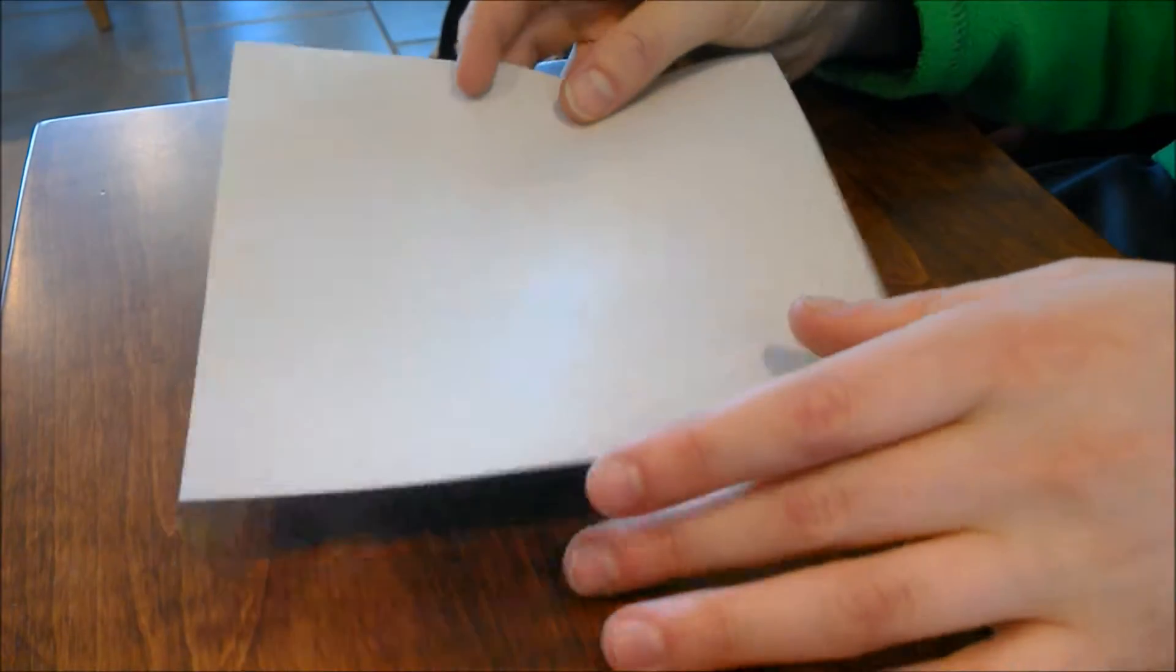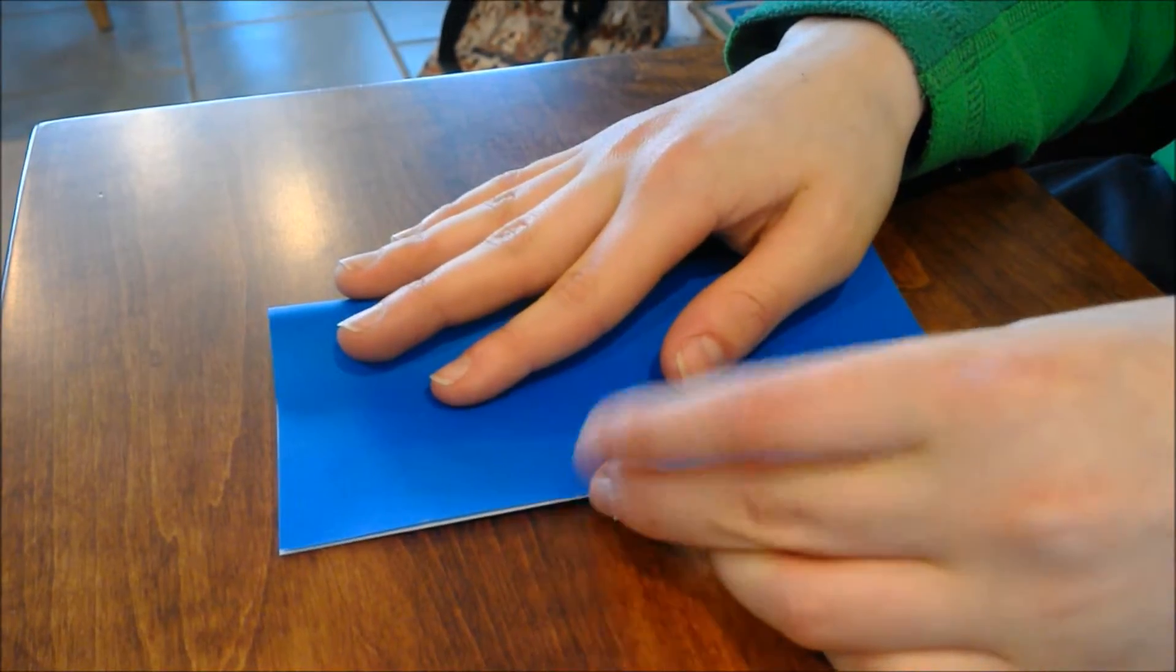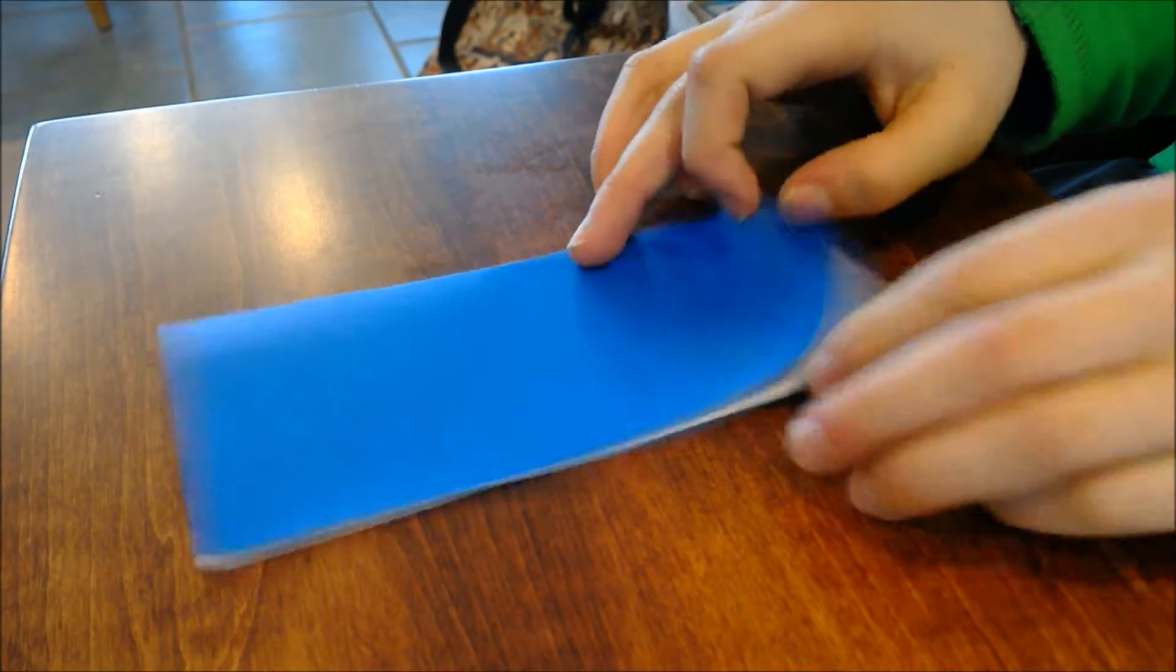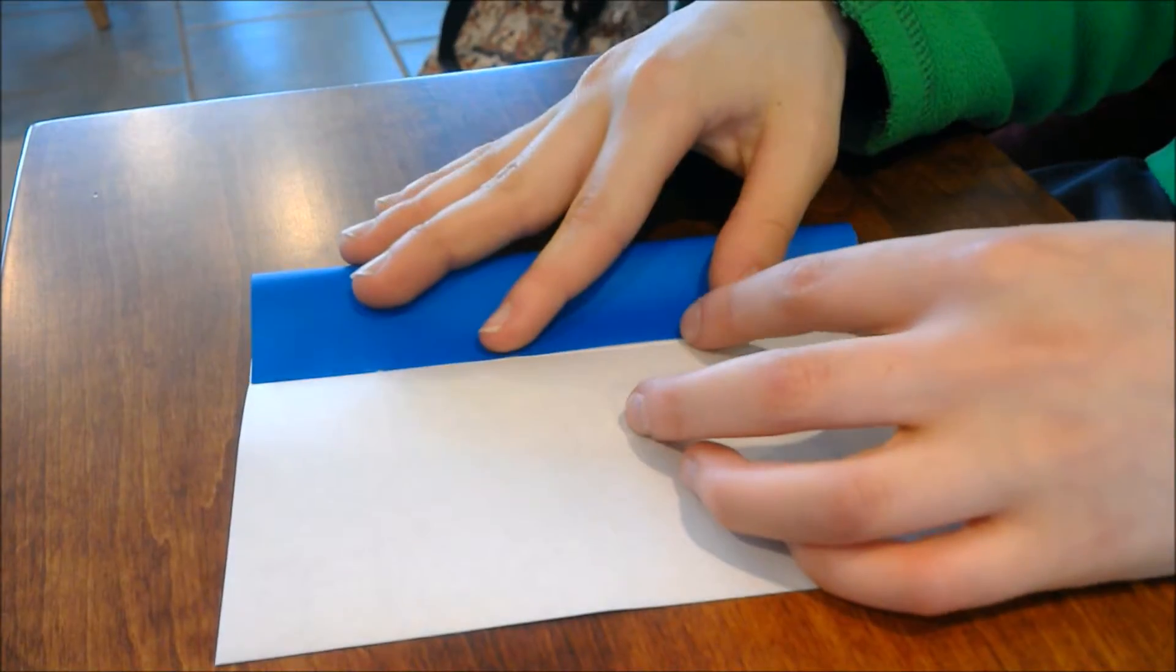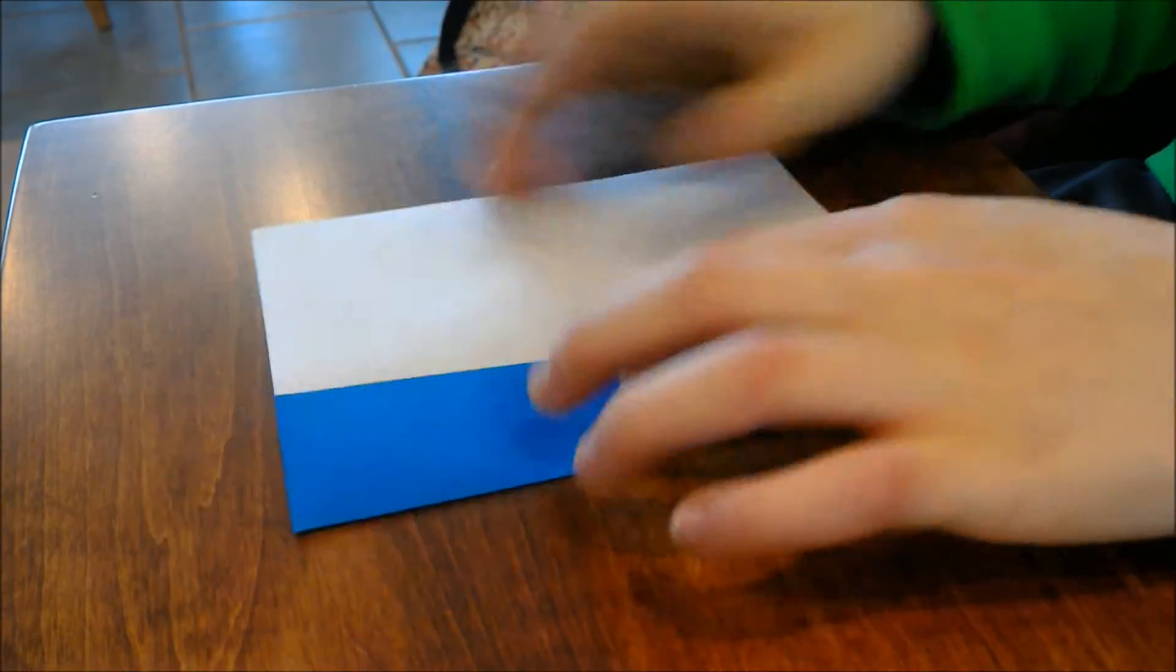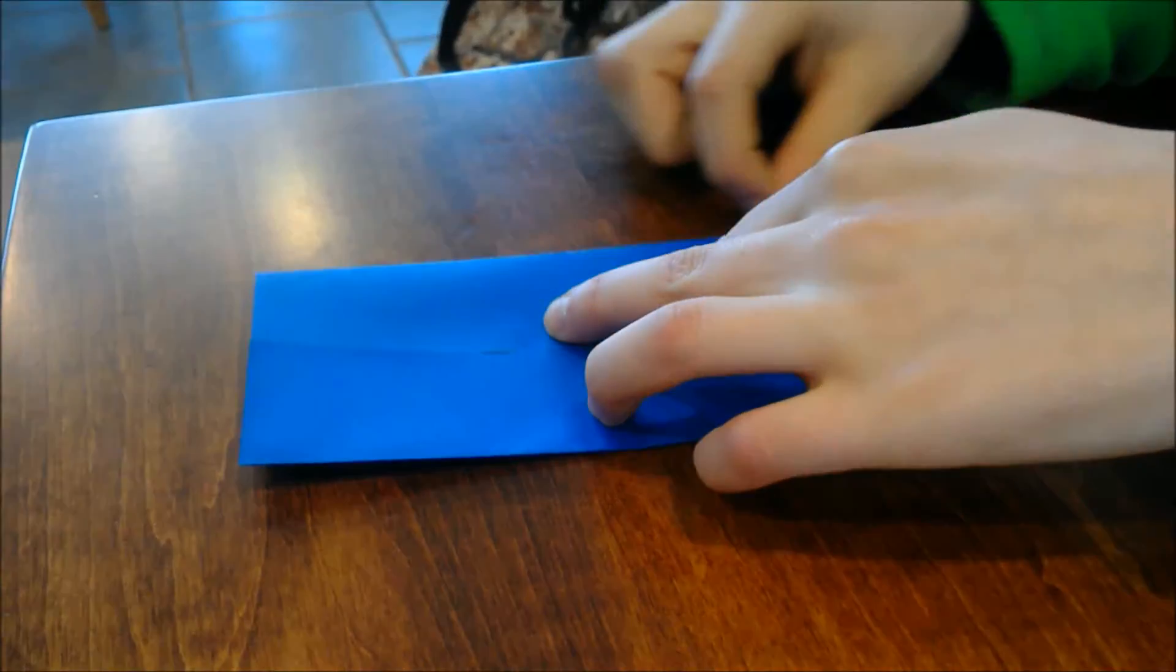If you have a white side on your piece of paper, you're going to fold in half the rectangular way like this, then unfold it and fold both sides into the center line that you just created.